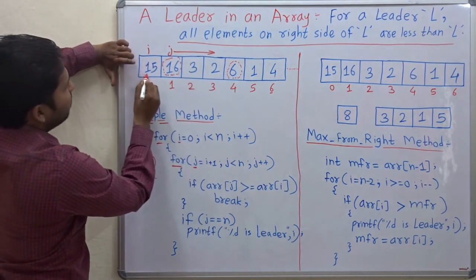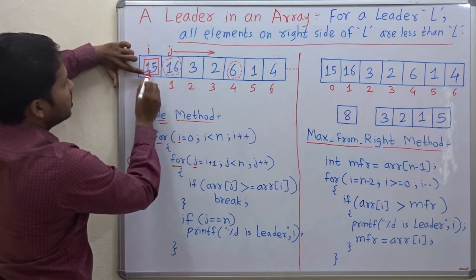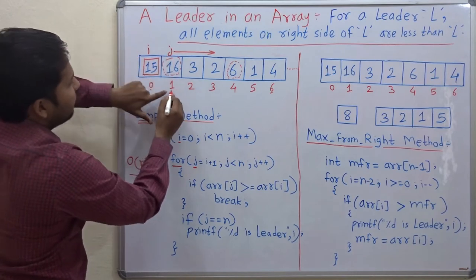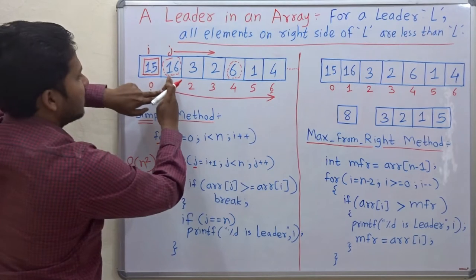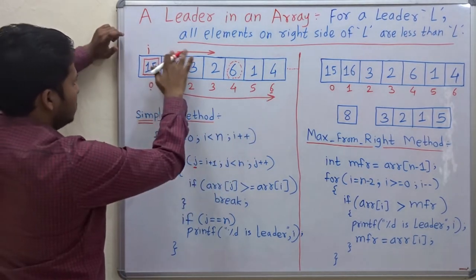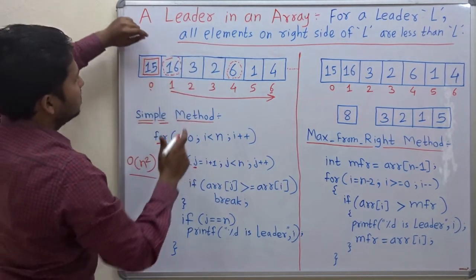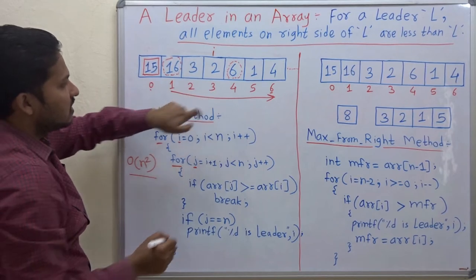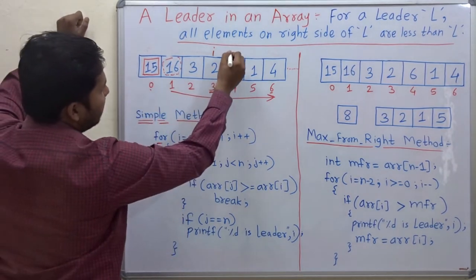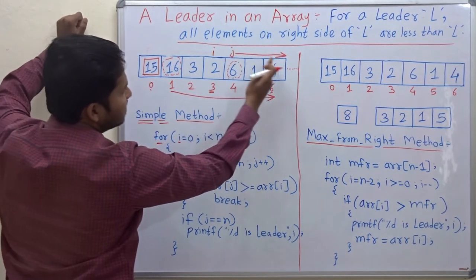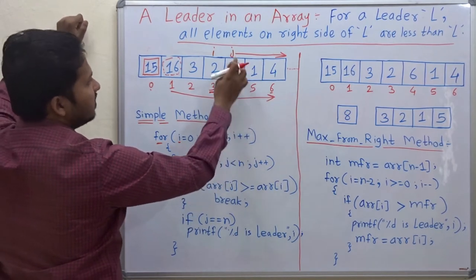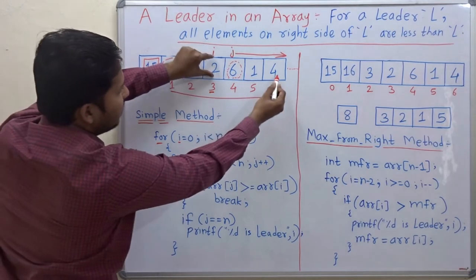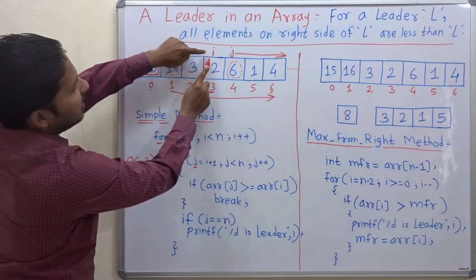Suppose we want to check the leader condition for 15 — i points to the 0th index, and j goes from the 1st index to the last index. For another example, if we want to check element 2, i will point to the third index, and j traces each element on the right side: the 4th, 5th, and 6th index. We check whether each element is less than the ith element.